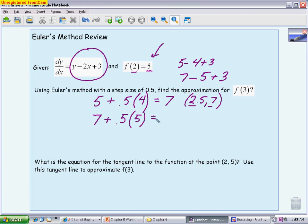0.5 times 5 is 2 and 1 half. 2 and 1 half plus 7 is 9 and 1 half. So that is my f of 3, 9.5. And that's what they were looking for. They wanted an approximation for 3. And using Euler's method with this step size, we get an approximation of 9.5.